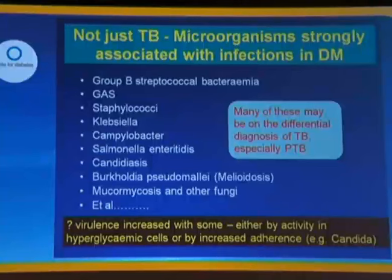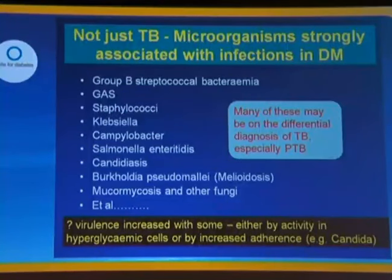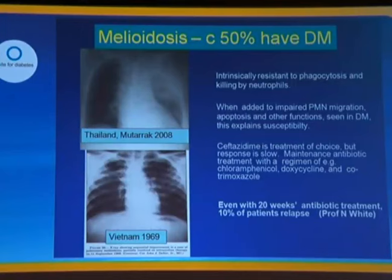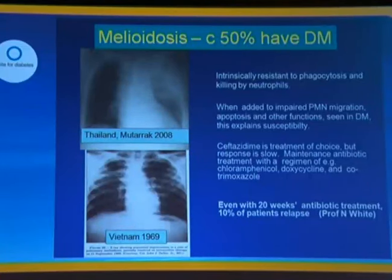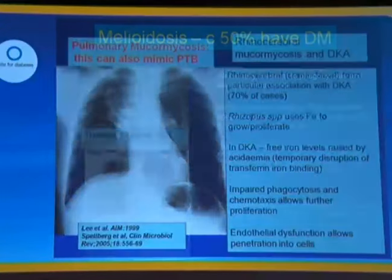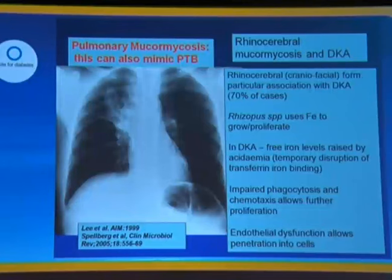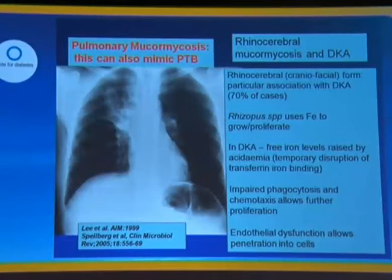Returning to the list of microorganisms strongly associated with infections in diabetes: many of these may actually be on the differential diagnosis of TB, especially pulmonary TB. For example, the chest X-ray of a patient with melioidosis — where 50% or more of patients have diabetes — could easily be mistaken for tuberculosis. Likewise, pulmonary mucormycosis, which is almost entirely restricted to diabetes, could also be mistaken for TB on chest X-ray. So remember there is a differential diagnosis, and microbiological confirmation is essential.